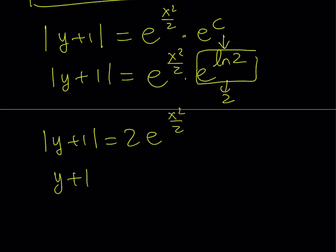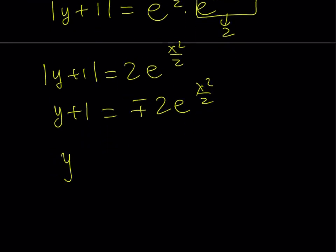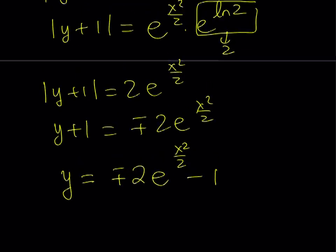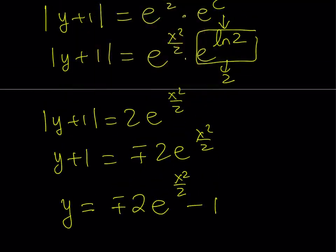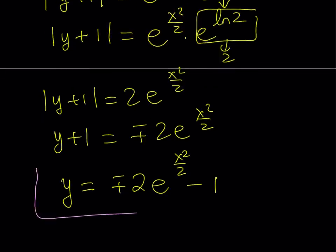And then if you subtract 1 from both sides, you're going to get an expression for y. So y by itself is going to equal plus minus 2 times e to the power x squared over 2 minus 1. So this basically gives us the solution of this differential equation with the initial condition.